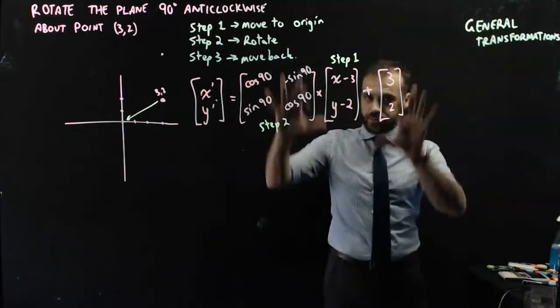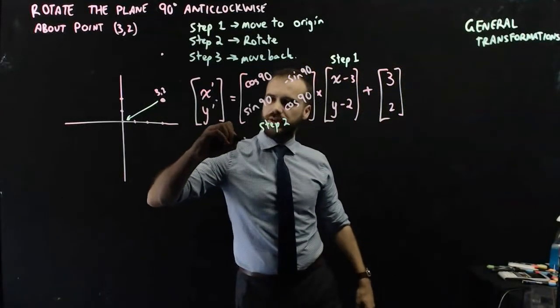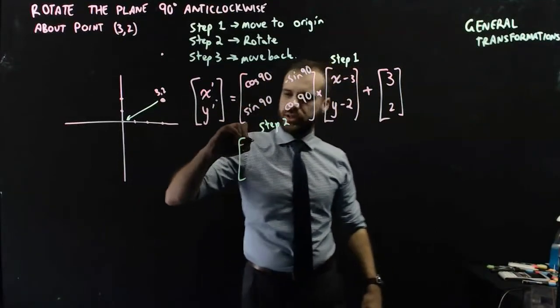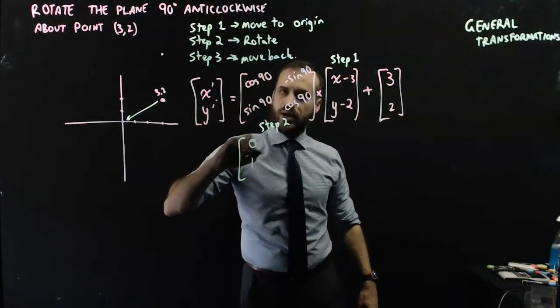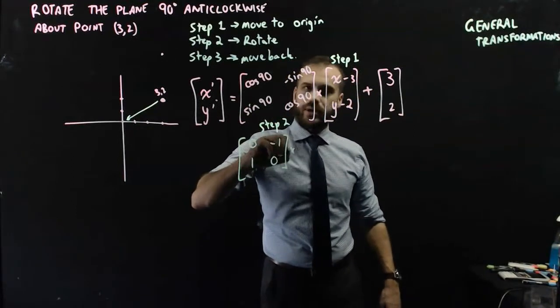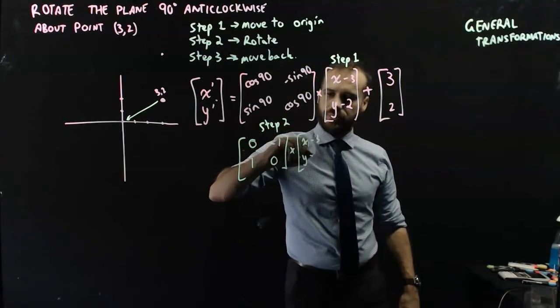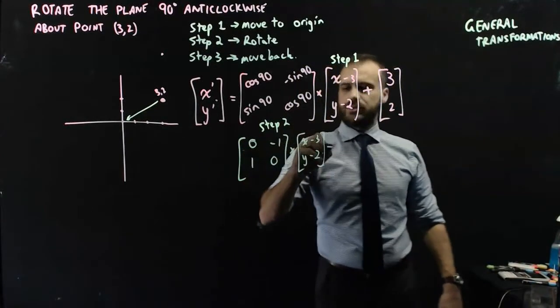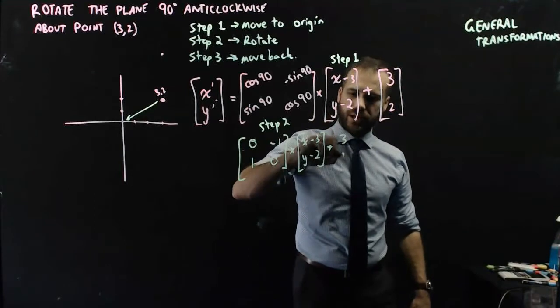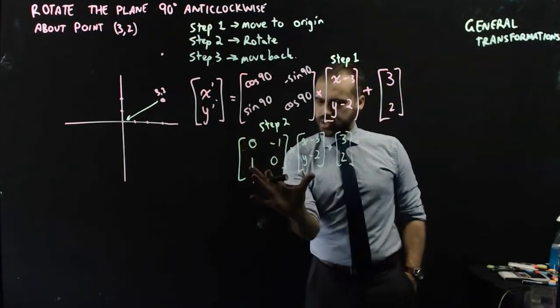So from here, we can start jumping through some hoops. Jump to yellow here. So we have cos 90: 0, 1, negative 1, and 0. And we're going to multiply it by this matrix here, x minus 3, y minus 2. And then when we're finished with that, we're going to add the matrix 3, 2 to it. Okay. So I'm going to multiply these matrices together.